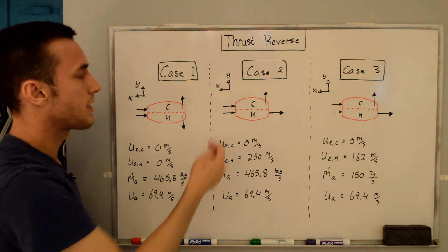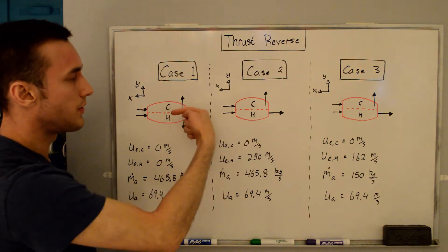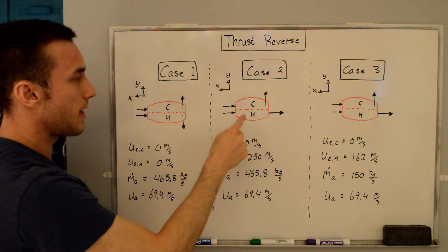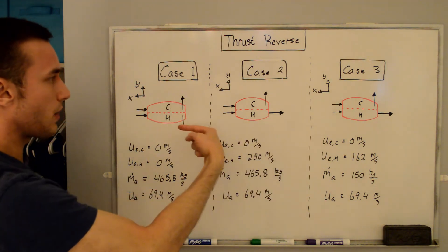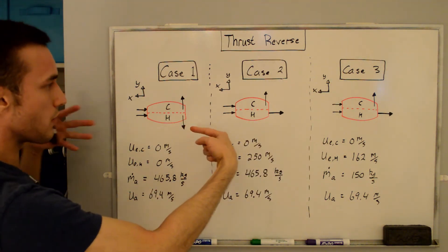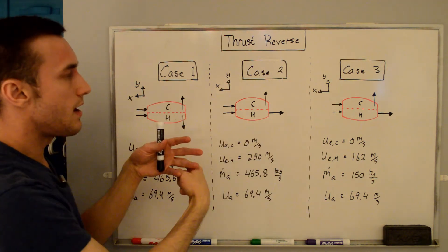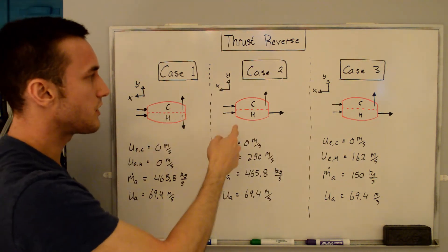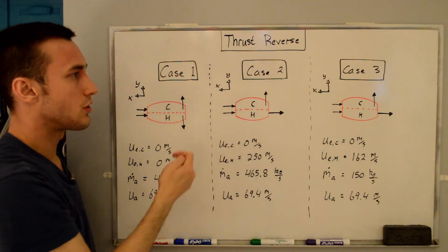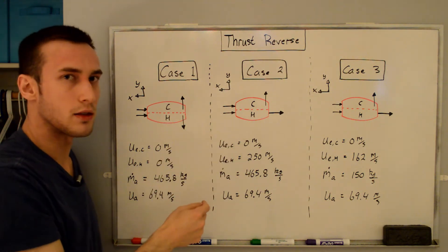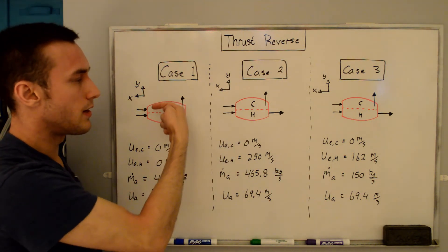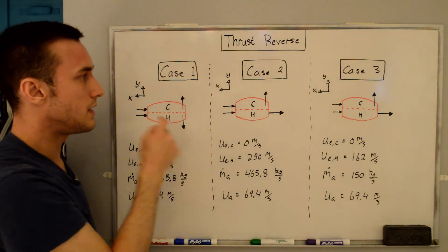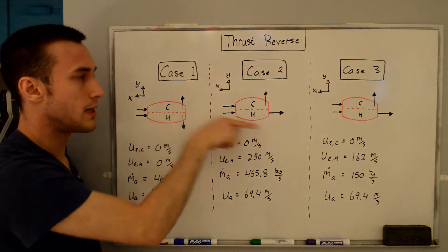For all these cases, note that I drew my coordinate axes with X pointed in the direction of travel. The engine or plane is flying this way, which is why the air enters in the opposite direction. If the thrust ends up trying to accelerate the plane it will be positive, and if it tries to decelerate the plane it will be negative.